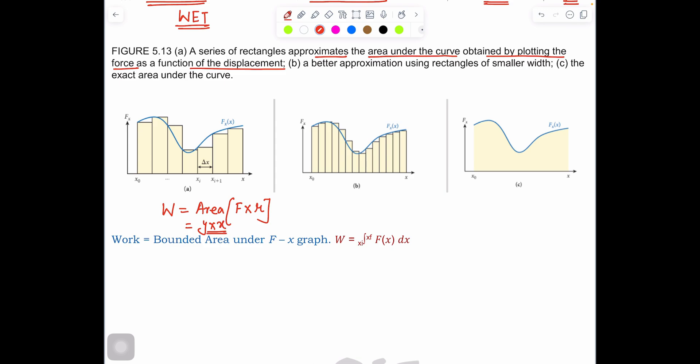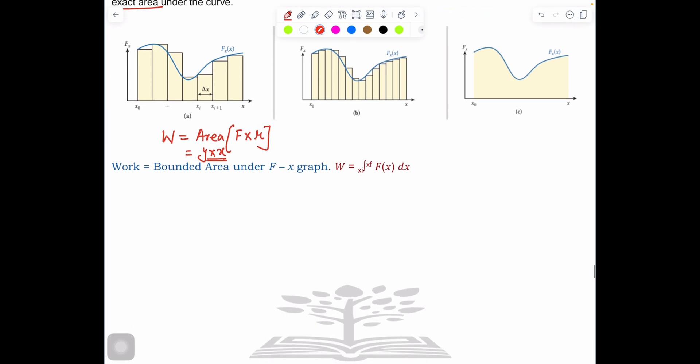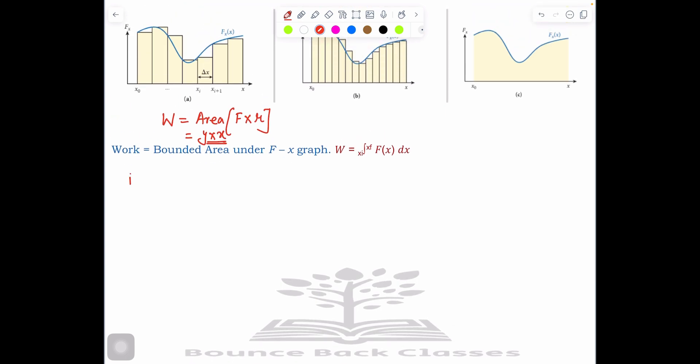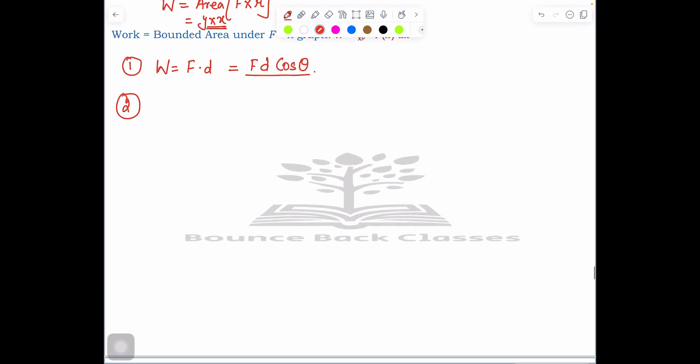I'll tell you a very easy way how to solve work done. The first technique is work done equals F dot d, which should be F d cosine θ. This is the first technique. Second technique: if you have a graph in any question, let's say this is your graph. Here is force, here is displacement d.